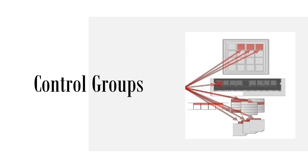Today I am going to talk about control groups in Linux. Control groups are called by their shorter name, cgroups. By using cgroups, we can have fine-grained control over allocating, prioritizing, denying, managing, and monitoring system resources. Hardware resources can be appropriately divided up among tasks and users, which increases the overall efficiency of a system.